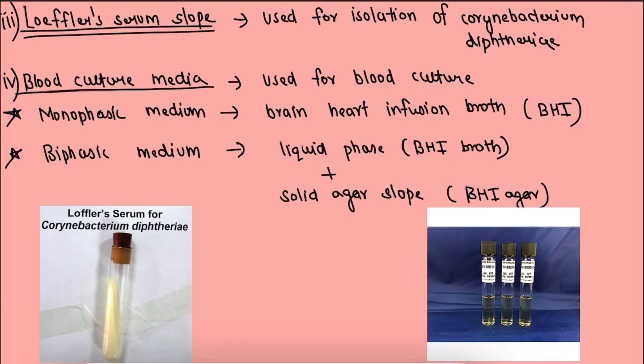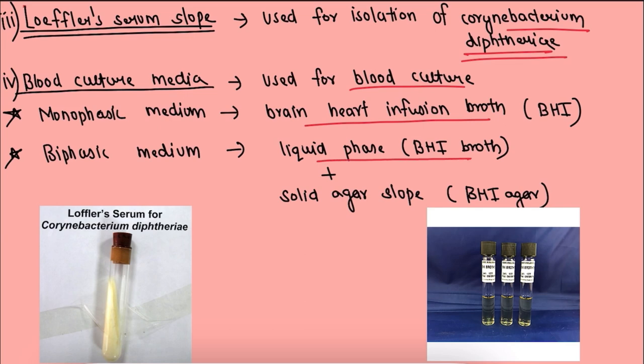The third enriched medium is Loffler's serum slope, which is used for isolation of Corynebacterium diphtheriae. The fourth is blood culture media, used for blood cultures. We have two types: monophasic medium, which consists of brain heart infusion broth (BHI broth), and biphasic medium, which consists of a liquid phase BHI broth and a solid agar slope BHI agar.